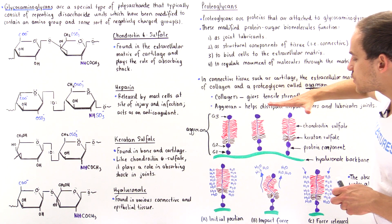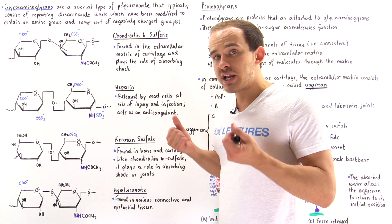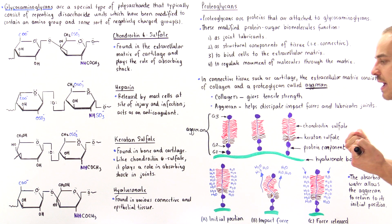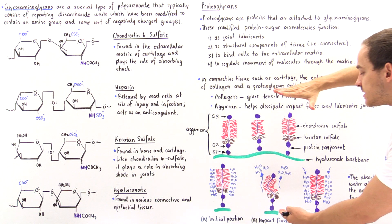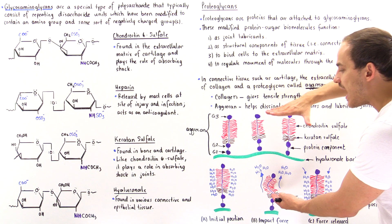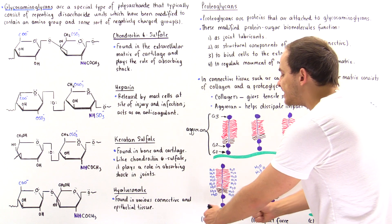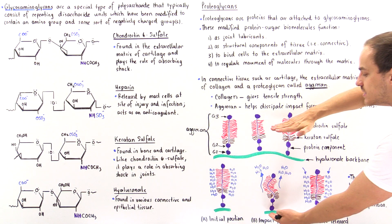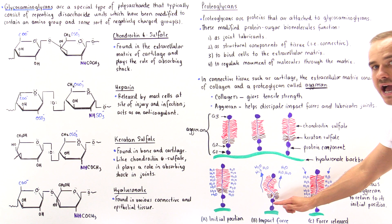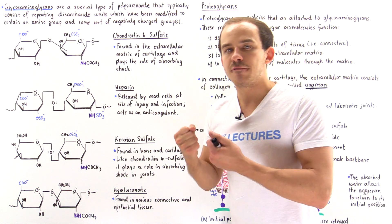What happens when we apply some type of force — for instance, when I jump and my knee joints experience an impact force? That force is applied onto the aggrecan, which forces all the water molecules to leave this section, slightly deforming the aggrecan proteoglycan molecule. When it is deformed in this way, it absorbs some of that force.